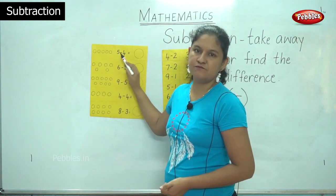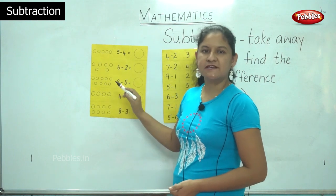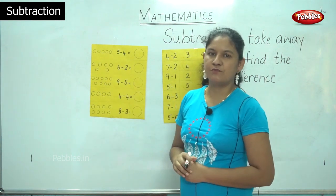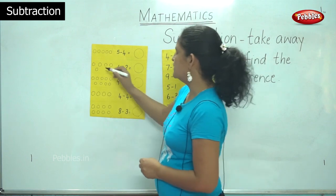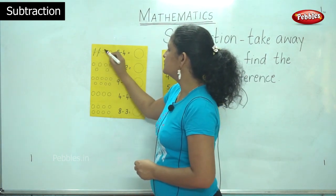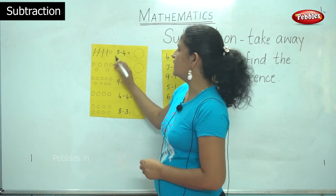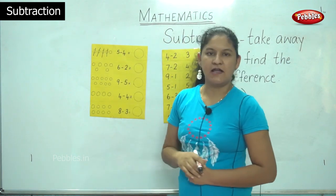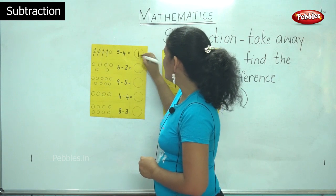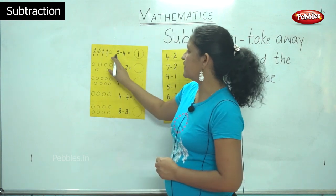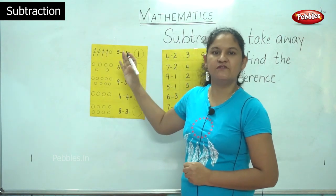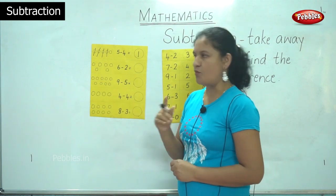So 5 minus 4, or 5 take away 4. We are going to take away 4 from the 5 balls that are drawn. So 1, 2, 3, 4 — and I have 1 ball remaining. So the answer is 1. 5 minus 4 gives me 1, or 5 take away 4 gives me 1.